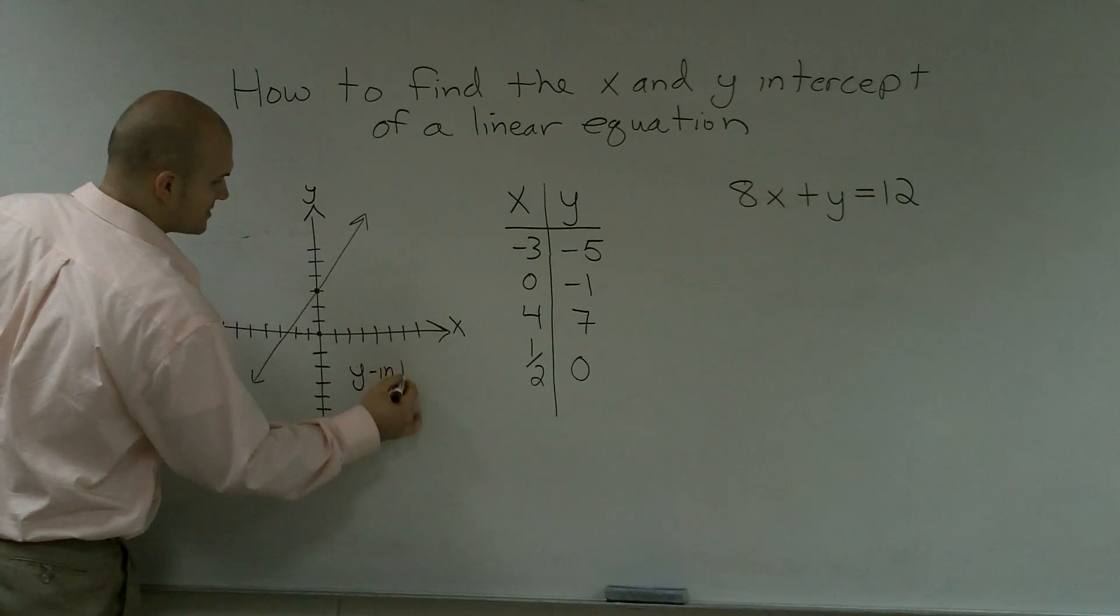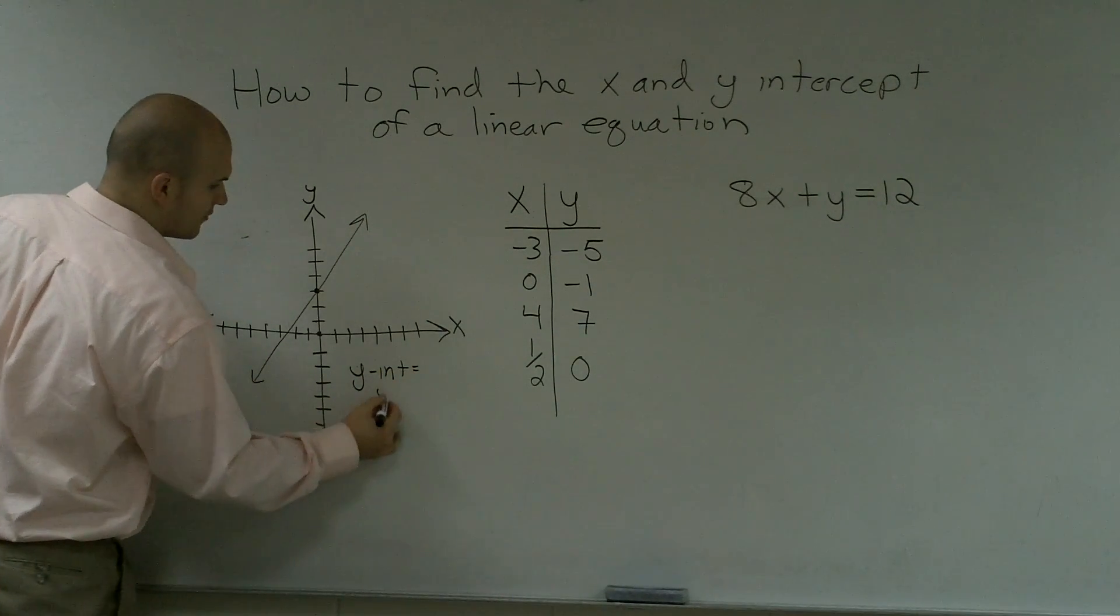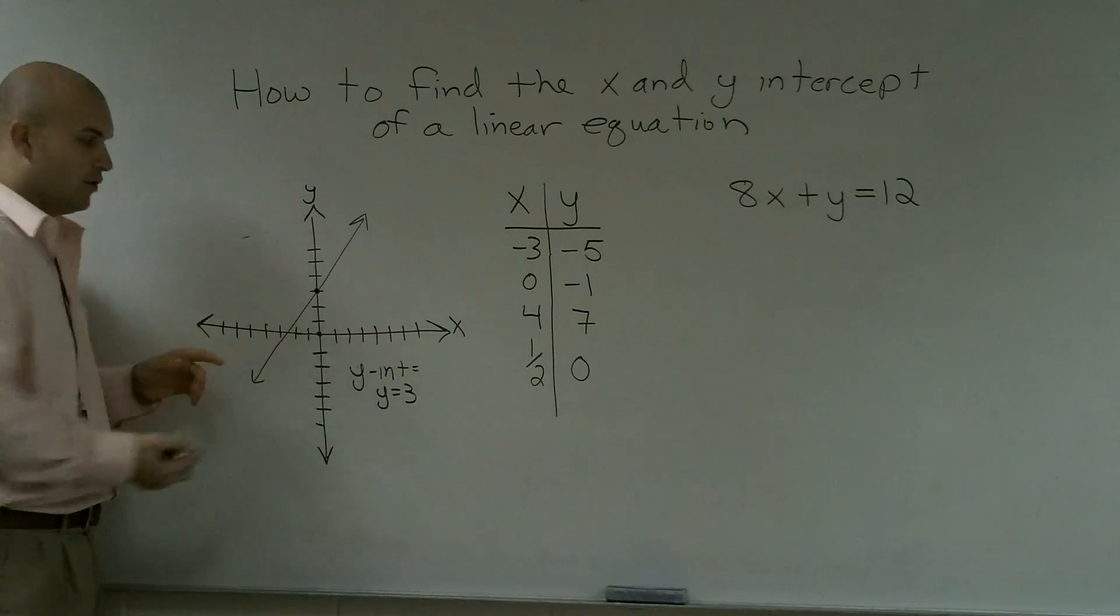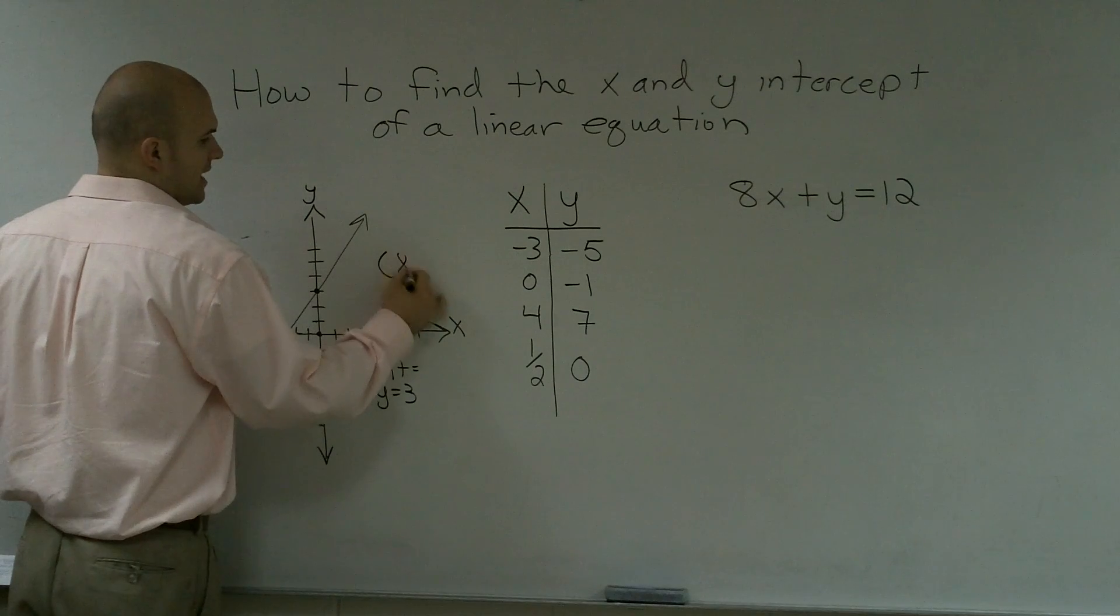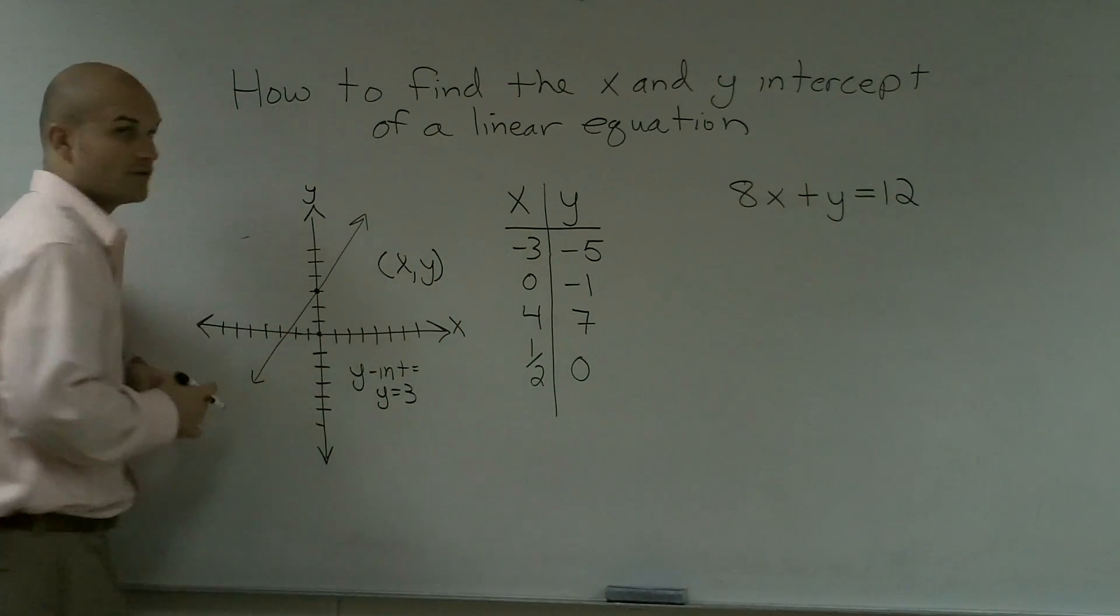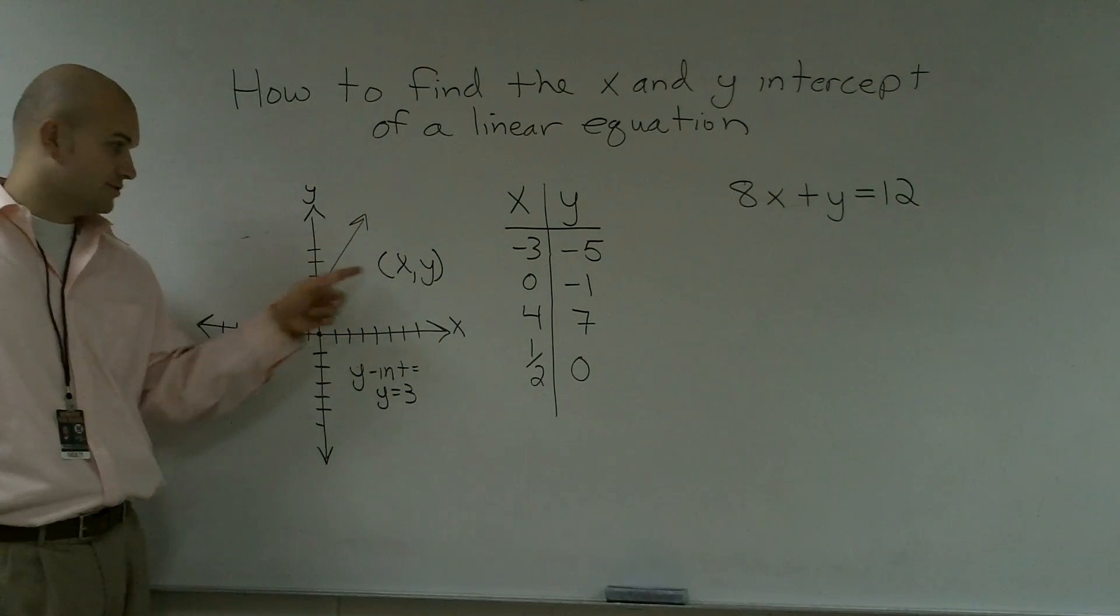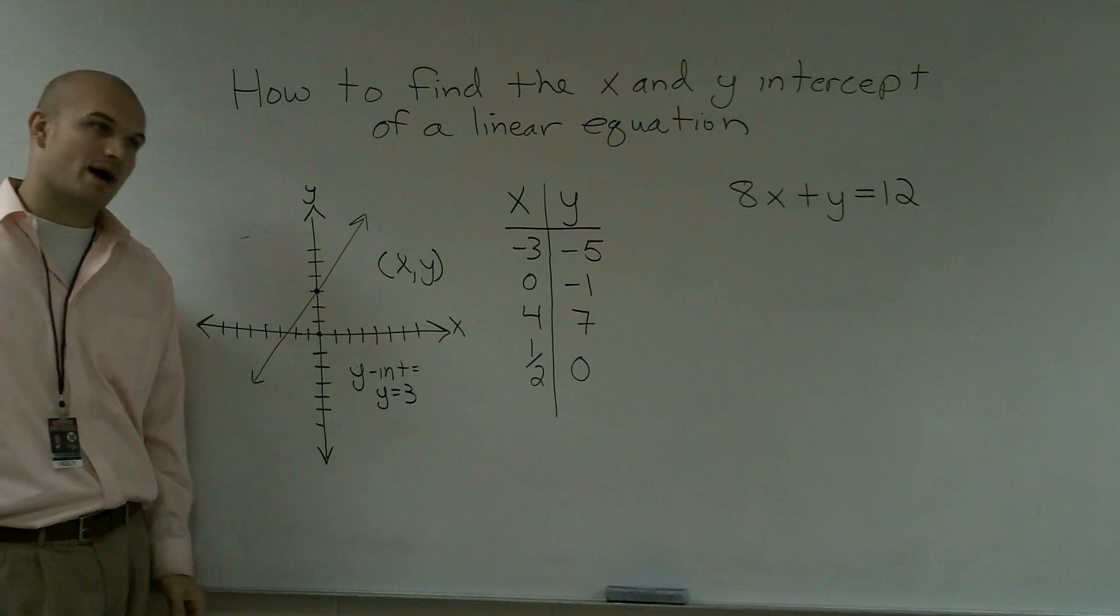So the y intercept is when y equals 3, or as a coordinate point, we know that a coordinate point looks like this, x comma y, correct? You're going to plot your x point first, and you're going to plot your y point second.